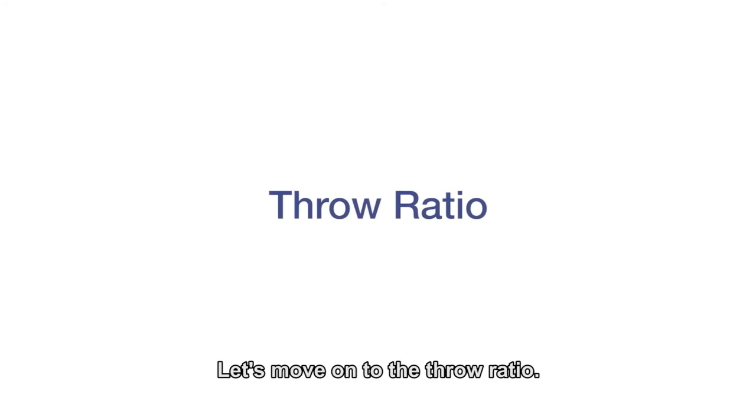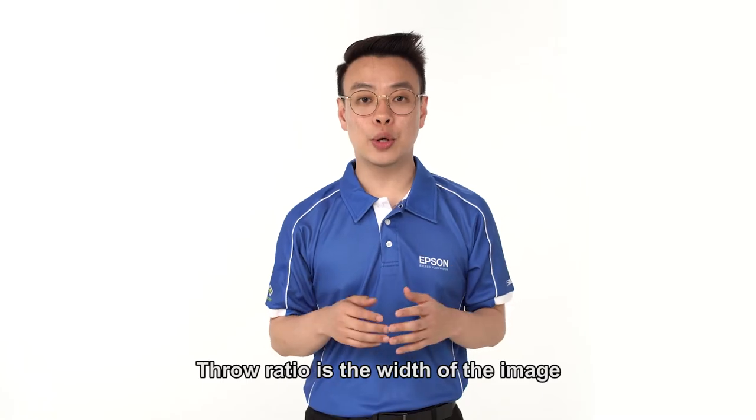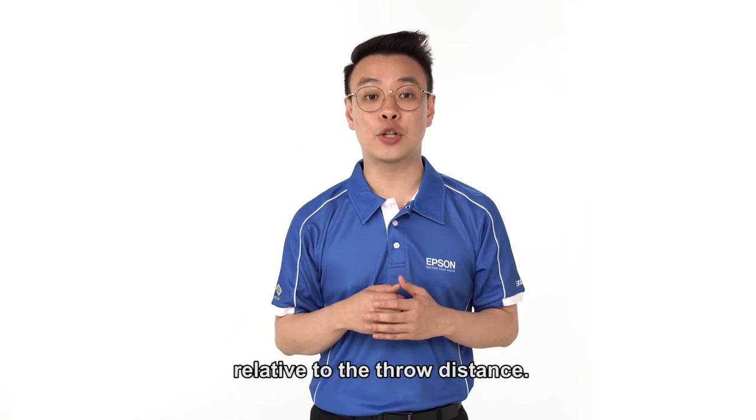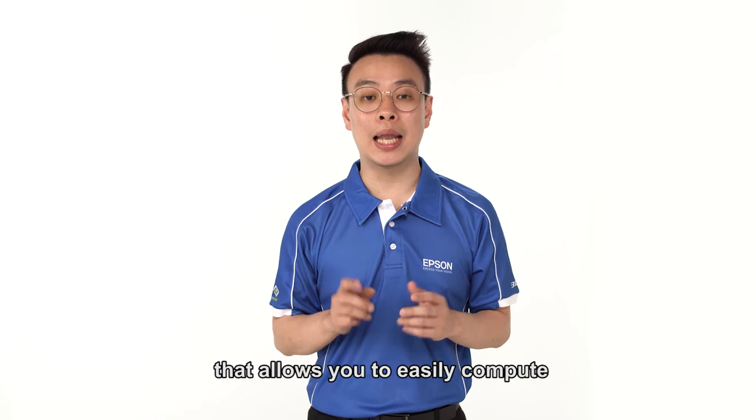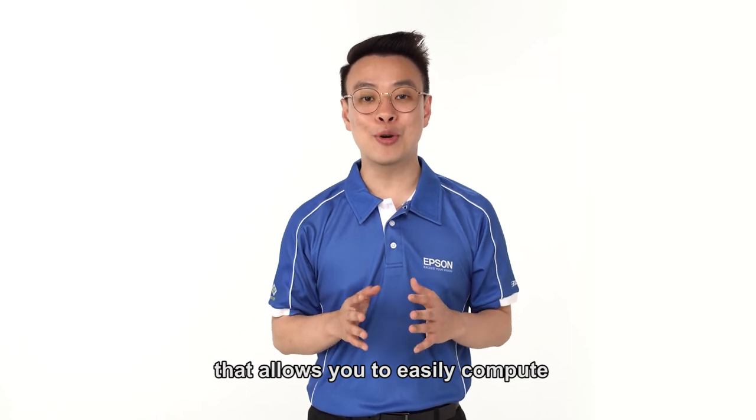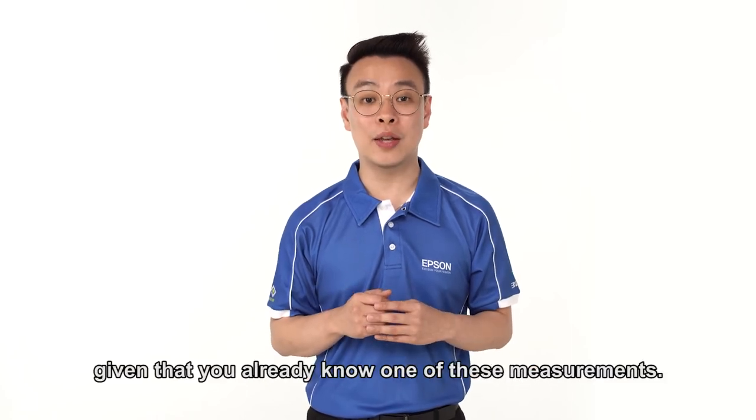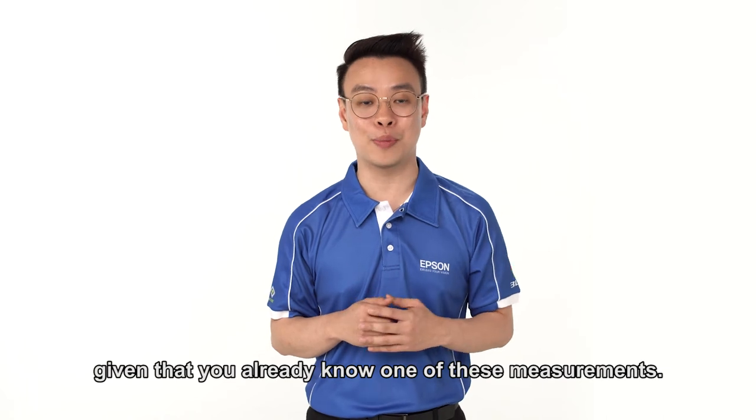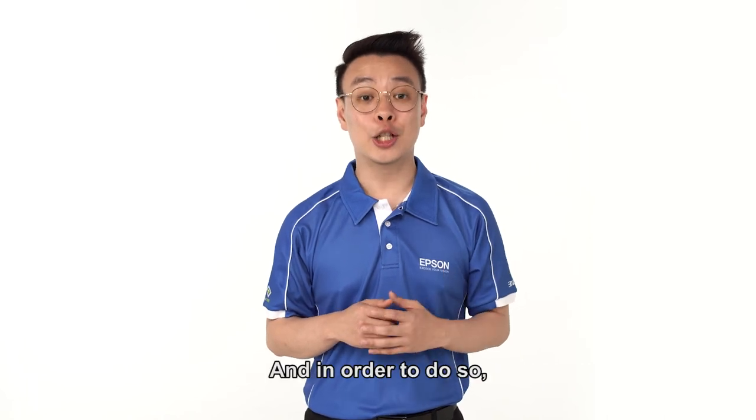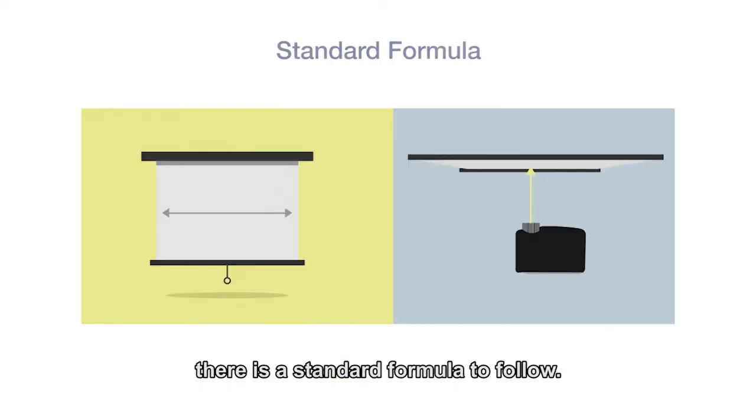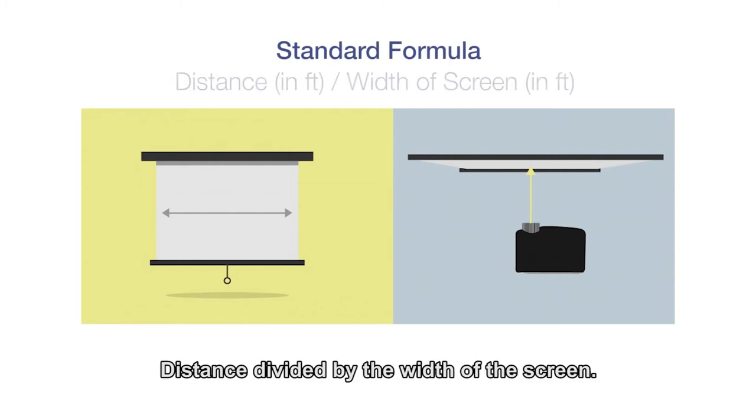Let's move on to the throw ratio. Throw ratio is the width of the image relative to the throw distance. The throw ratio is a simple formula that allows you to easily compute throw distance or image width given that you already know one of these measurements. And in order to do so, there is a standard formula to follow. Distance divided by the width of the screen.